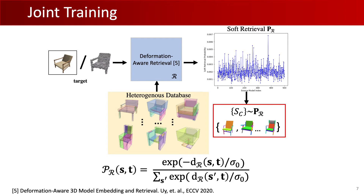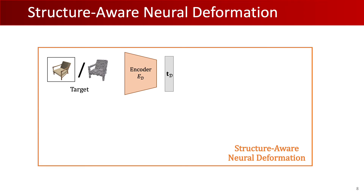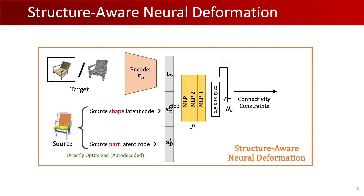We optimize the retrieval and deformation modules in an alternating scheme. In addition to joint training, we propose a novel structure-aware deformation module. Unlike prior neural deformation modules, it can handle heterogeneous data, where each model has a different number of deformation parameters, which is especially important for human-made objects made of different numbers of parts. The given target is encoded into a target latent code, and for a source shape selected from our soft retrieval, we take its source latent code and per-part latent code, and concatenate these into a global vector. These are then passed through a series of lightweight MLPs to produce per-part deformation parameters, which are concatenated for all parts, projected to satisfy connectivity constraints, and finally producing the output deformed model.